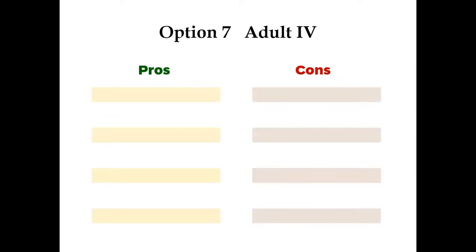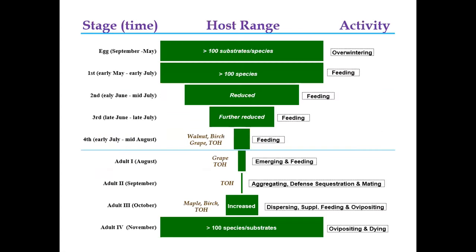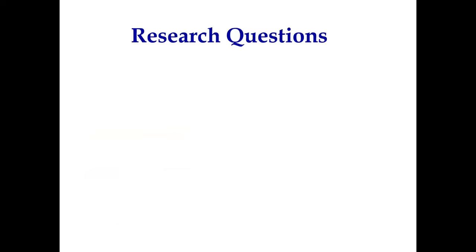By stage number four, I don't see any point to treat at all. So let's go back to the schematic I created. The way I see it, the crucial point is treating at adult stage two. If we can cut off the populations at this stage, I think we are in good shape. To support this statement, I focused my research on specific questions.